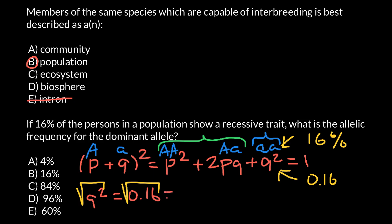So Q would equal 0.4. If we know that the frequency of the recessive allele Q equals 0.4,